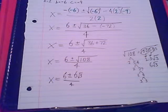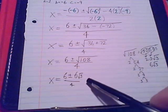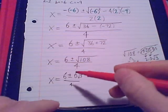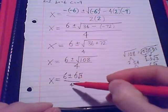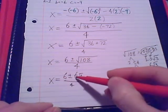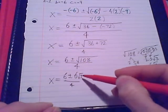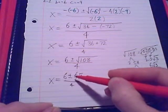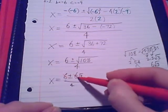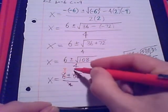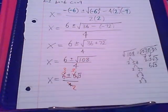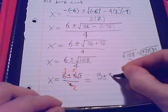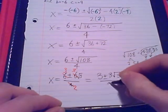So that gives us 6 plus or minus 6 radical 3 over 4. That was the first way we wrap up a problem — simplify the radical. The second thing we do is ask: can we simplify the fractional part? We're looking at three terms — two in the numerator and one in the denominator — and we can divide each of these by 2.